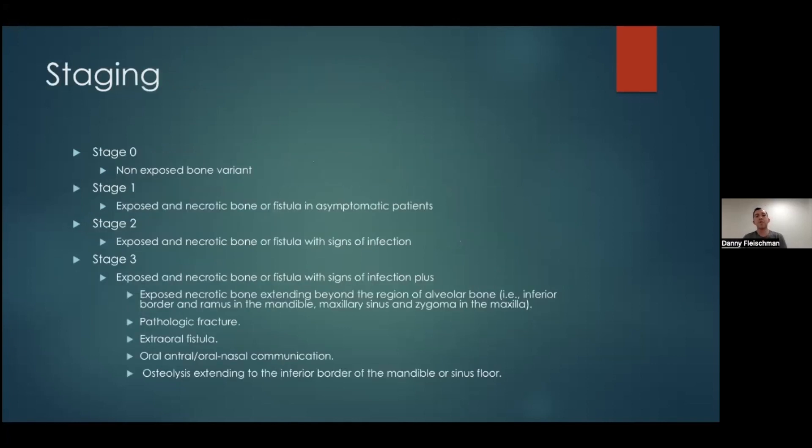The first thing we do with any patient who has exposed bone or any symptoms of medication-related osteonecrosis of the jaw is you have to stage it. There are four different stages of osteonecrosis of the jaw. The first is stage zero, which is there's no exposed bone, there's no fistula to the bone. However, the patient has vague symptoms that cannot be attributed to anything else except the possibility of early MRONJ. They could have pain, numbness, but again, there's no exposed bone, no sign of infection, just these vague symptoms.